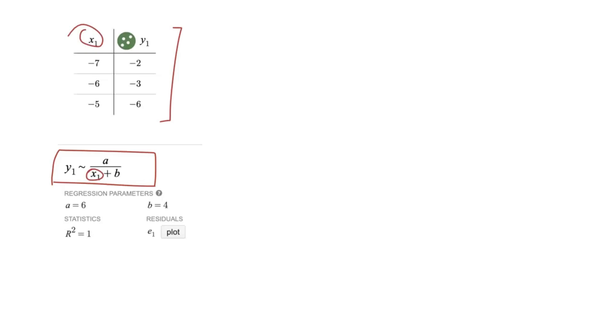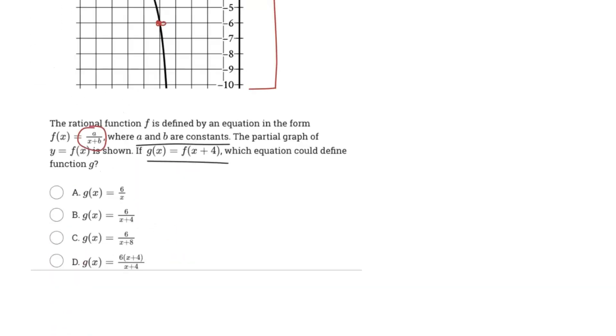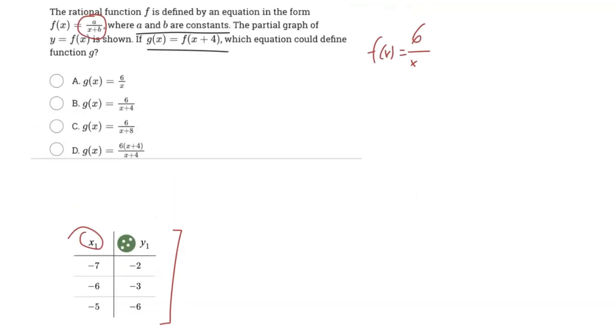We'll have to identify x₁ here as well. So we can see Desmos does the work for us. We got a = 6, b = 4, and therefore we know our equation now is f(x) = 6/(x+4).